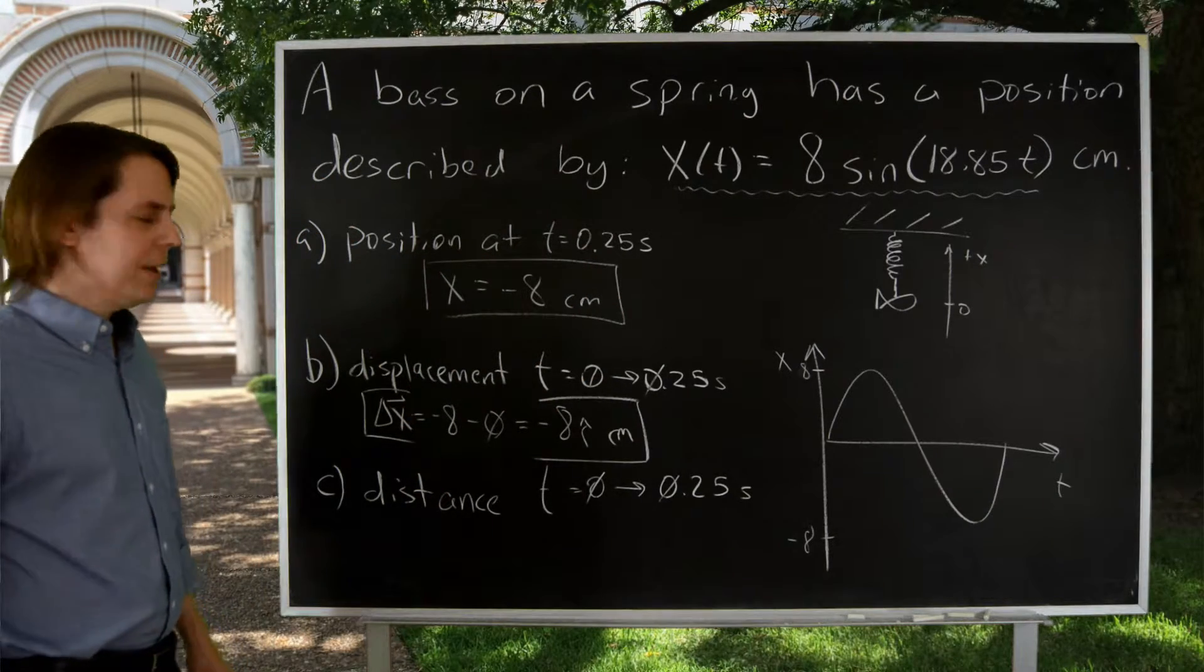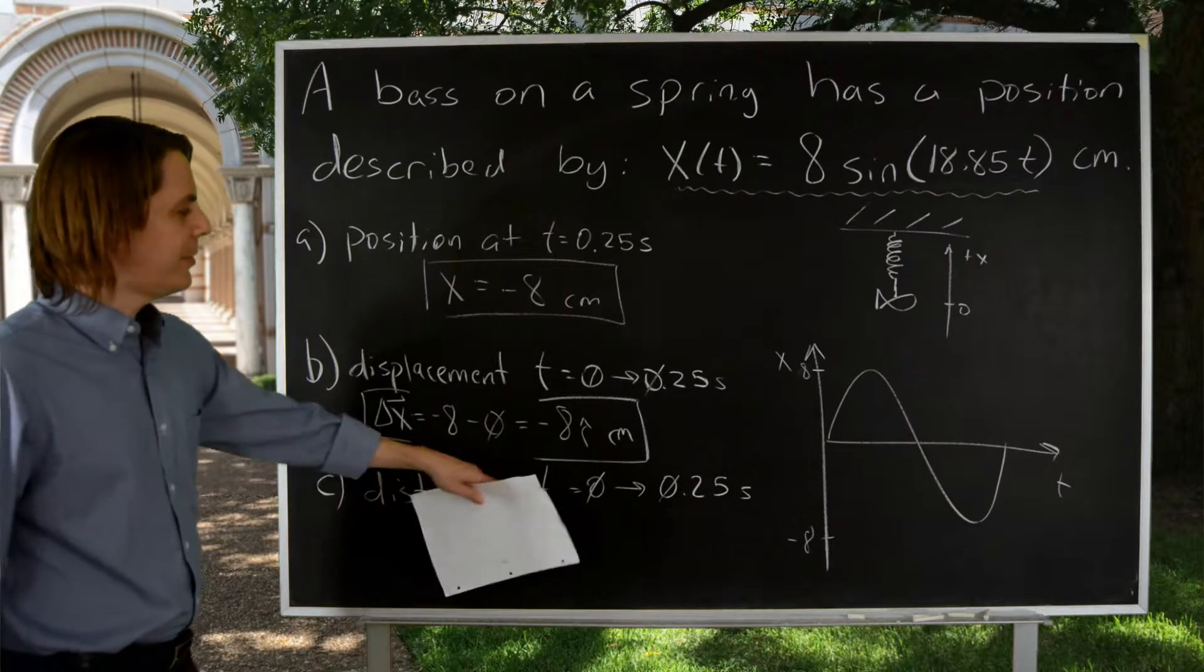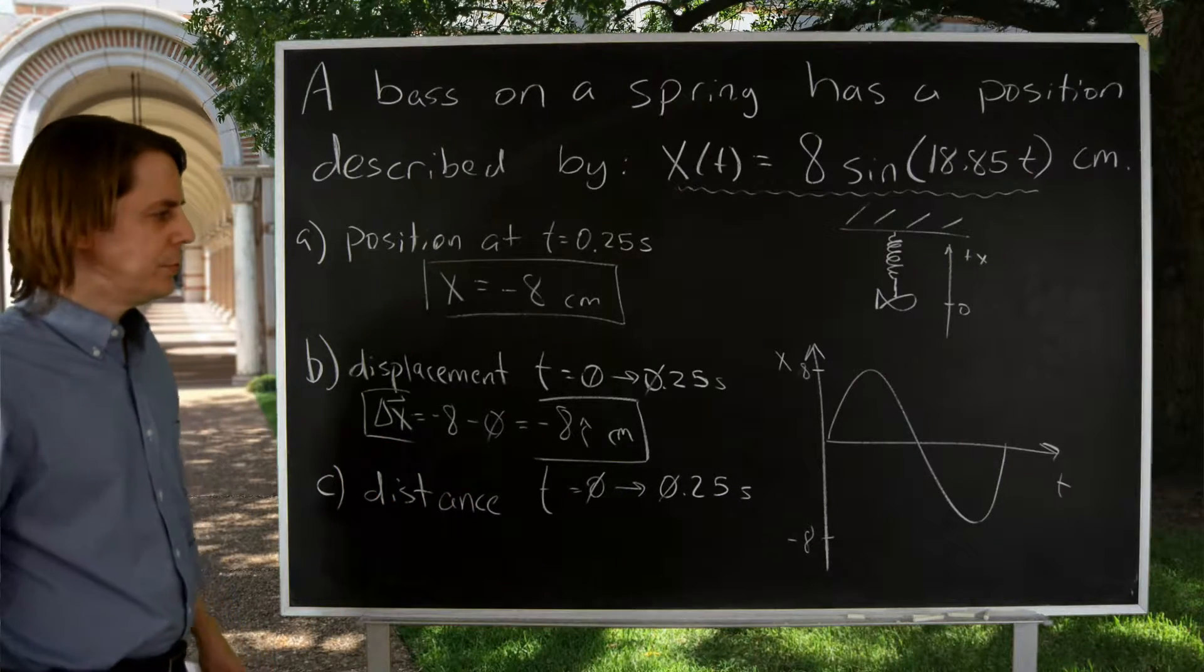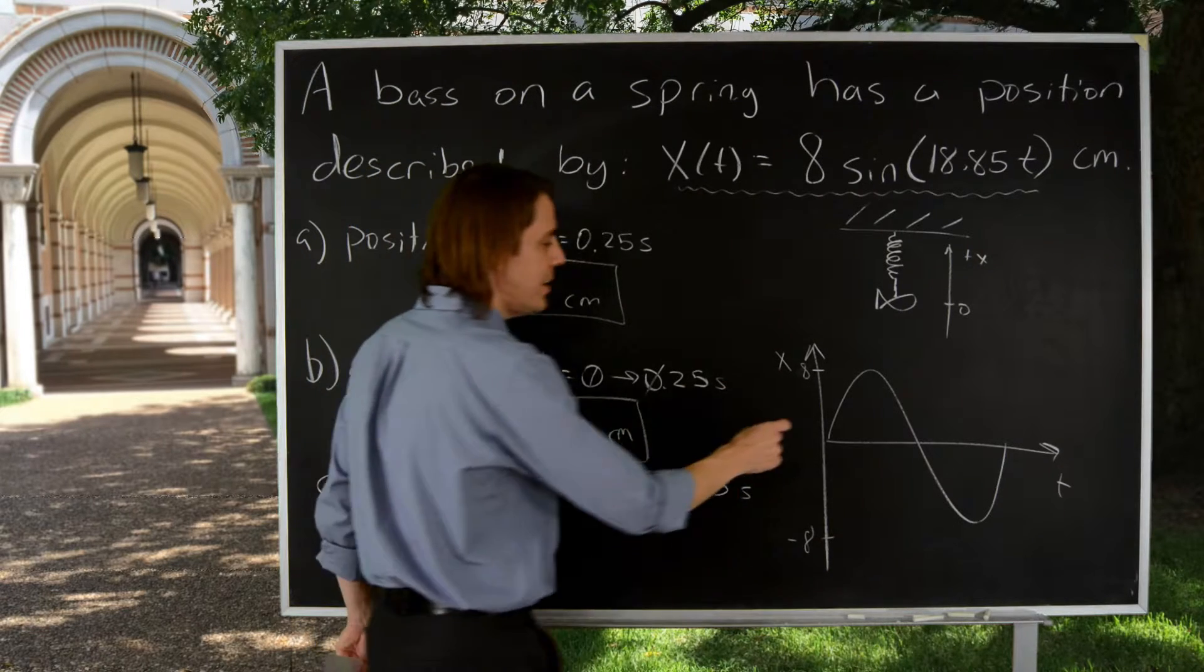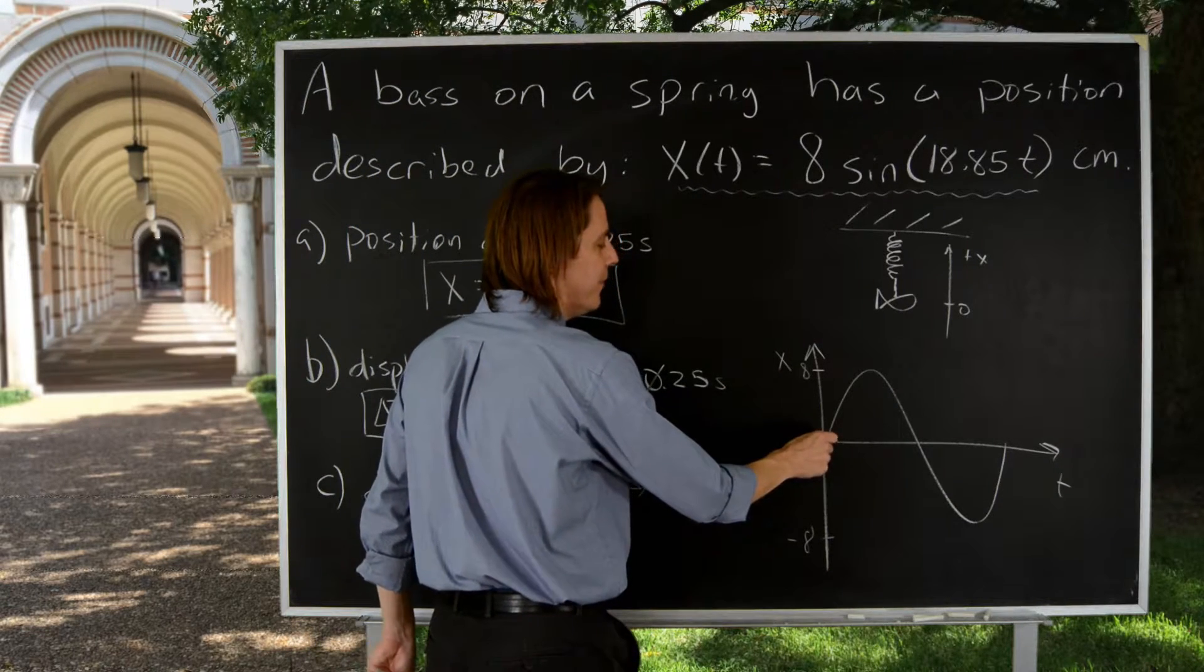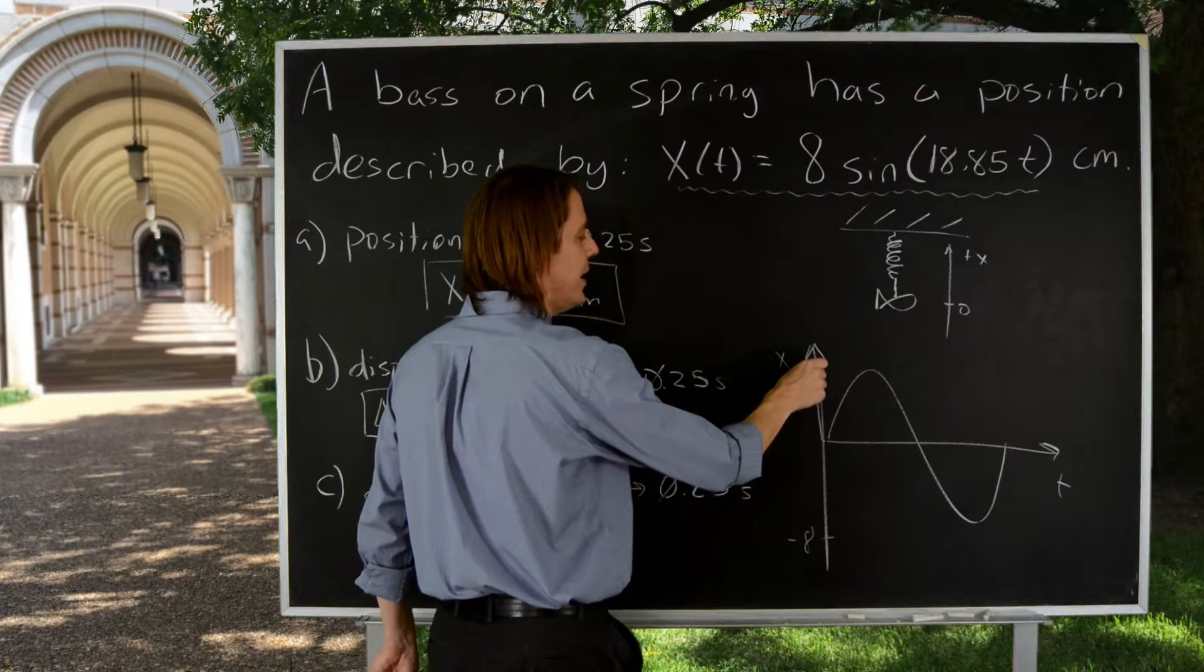Position is minus eight centimeters. And then finally, the distance on the same interval from 0 to 0.25. All right, this is where it's useful to have made the plot. Because now you can think about the entire path. It first started at zero, and it went up to eight.